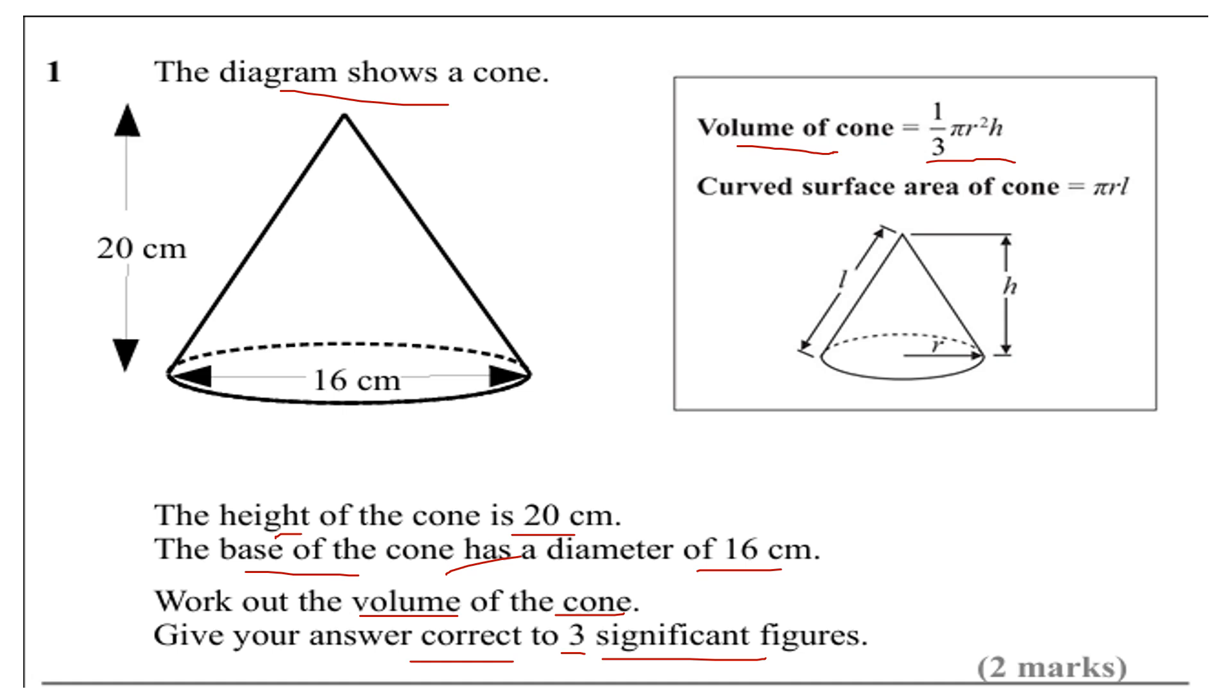So h equals 20. d equals 16, which is the diameter, but we want the radius, so that'll be half of it. The radius here will be 8.